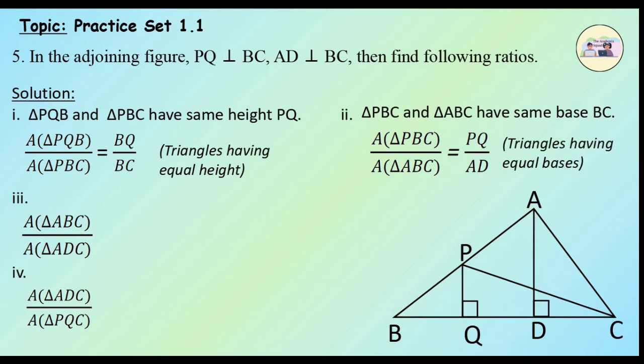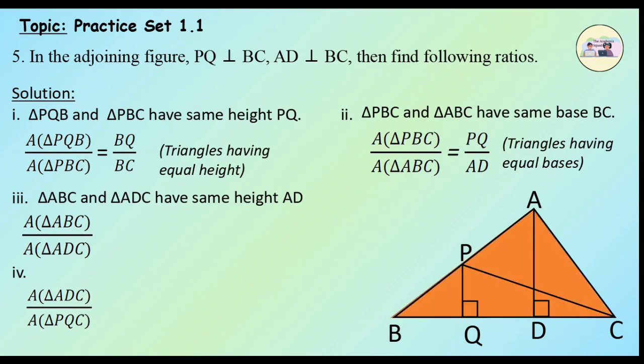Question 3: Find area of triangle ABC upon area of triangle ADC. Triangle ABC and triangle ADC have the same height, i.e., BC. Therefore, the ratio of areas equals the ratio of their corresponding bases. So, area of triangle ABC upon area of triangle ADC = BC upon DC.